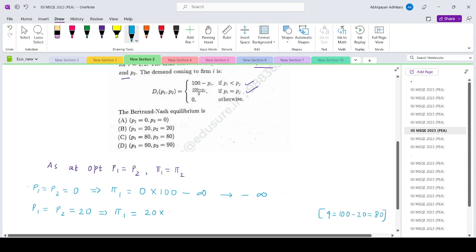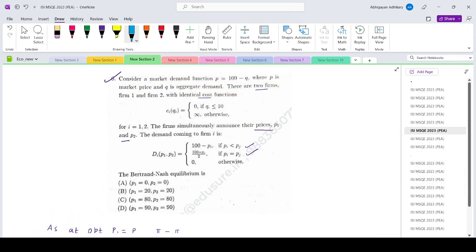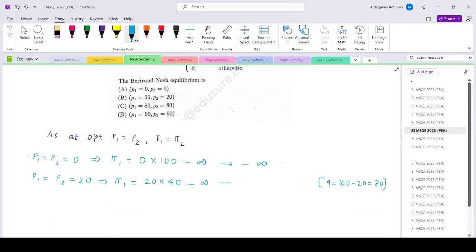And firm 1 will get 40 of it. Since it's producing 40 units, this cost will again be infinite. So this will again tend to minus infinity.